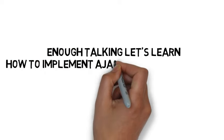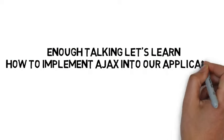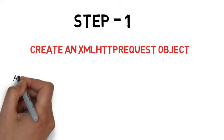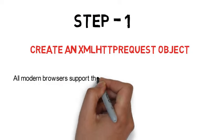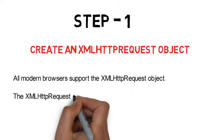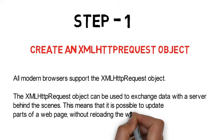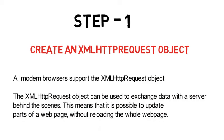Let's learn how to implement Ajax. Step number one: we need to create an XMLHttpRequest object. All modern browsers support the XMLHttpRequest object — it is the backbone of Ajax. It can be used to exchange data with the server behind the scenes, making it possible to update parts of a webpage without reloading the whole page.